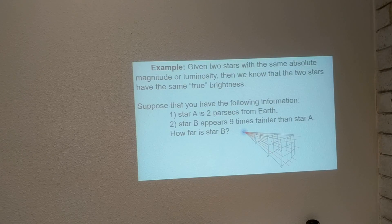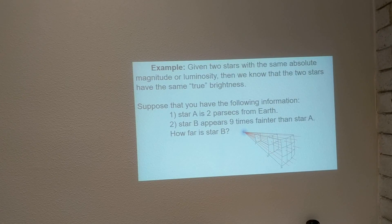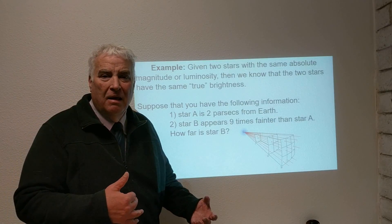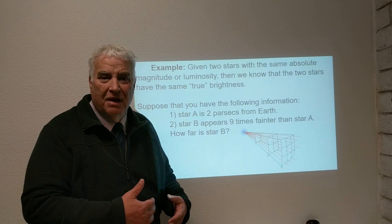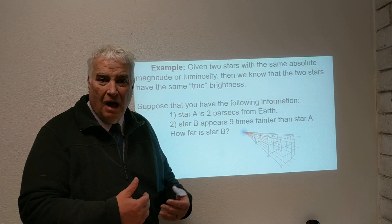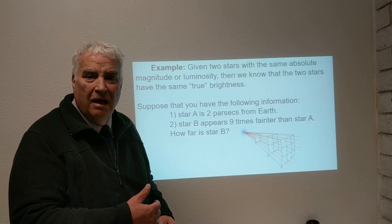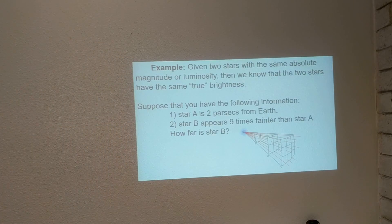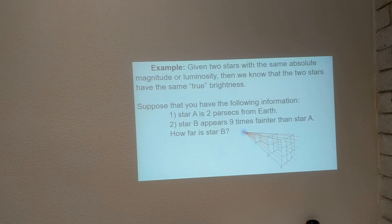So if we consider an example: if we have two stars with the same absolute magnitude or luminosity, then we know that the two stars have the same true brightness. We're going to simplify the problem by thinking about two stars that are intrinsically the same kind of star, and the only difference is they're at different distances. Suppose that you have the following information: star A is two parsecs from Earth,